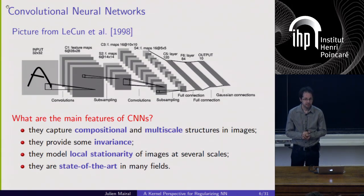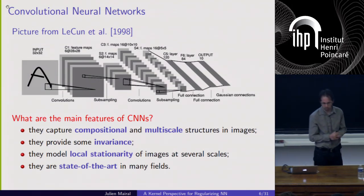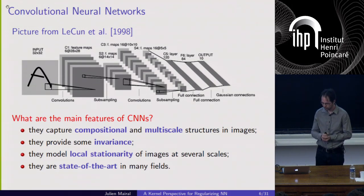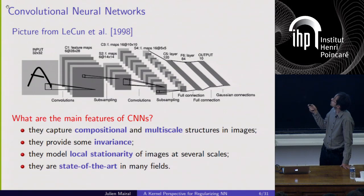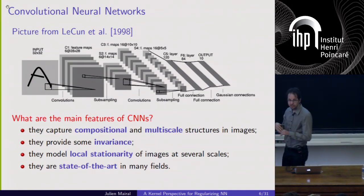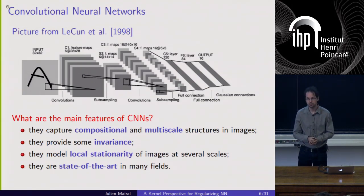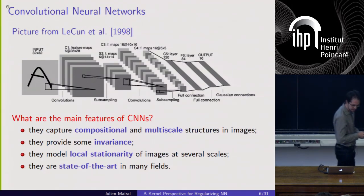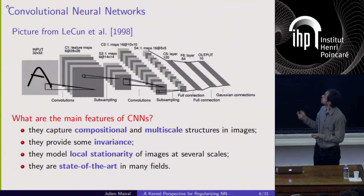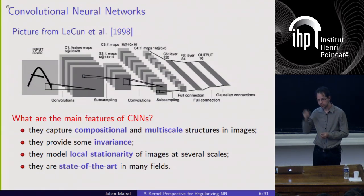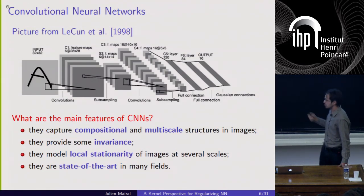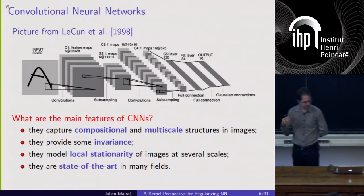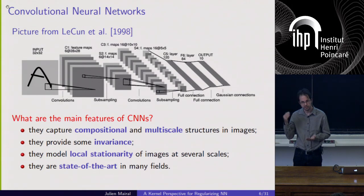The main features of CNNs and what can explain their success is not completely clear from a theoretical point of view, but there is still lots of intuition. In particular, the information about the input image represented on these maps tends to capture multi-scale structures and also compositional structures, in the sense that features at layer K are simply functions of features from previous layers. This is also a model with local stationarity — on each map you represent information from a local neighborhood in the input image, which we call the receptive field.